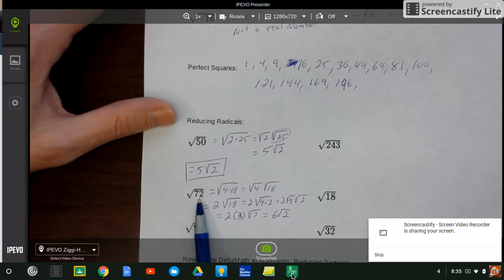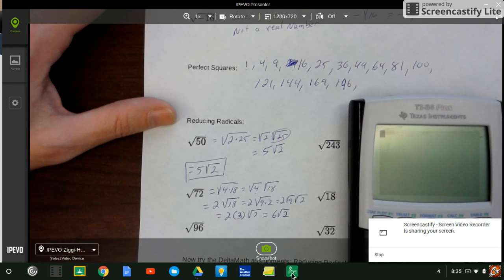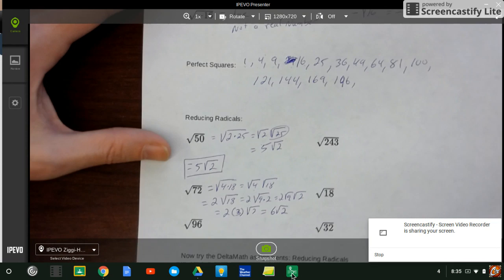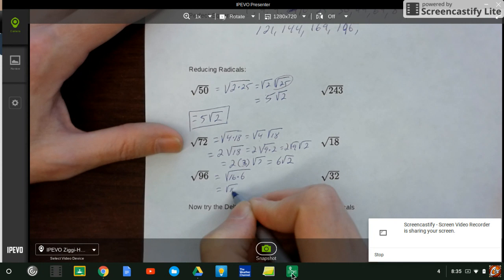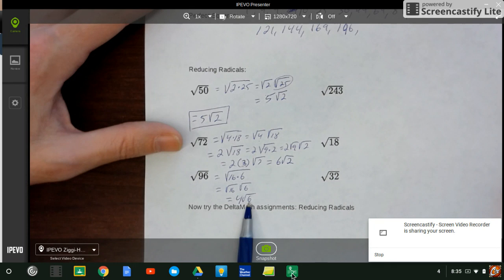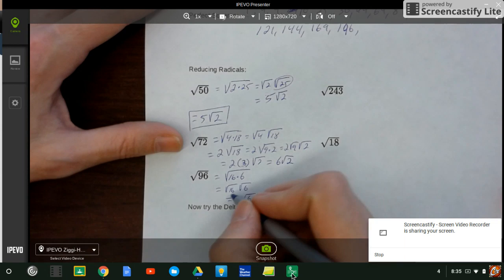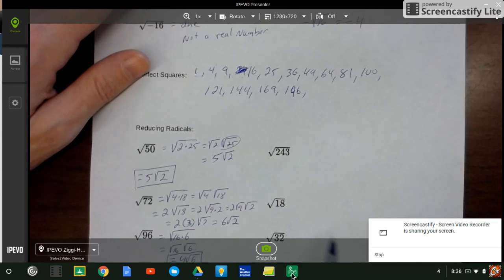We could have done that faster. If I'd realized that 72 is actually 36 times 2, I could have gotten here a whole lot faster. So try to find quicker ways to do it, like 96. Maybe let me try 16 - 16 and 6 makes 96. So 16 times 6, that's square root of 16, square root of 6. So that's 4 square root of 6. 6 can't break down anymore because 2 times 3 makes 6, but neither 2 nor 3 are perfect squares.